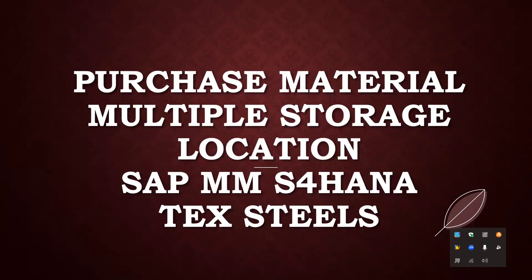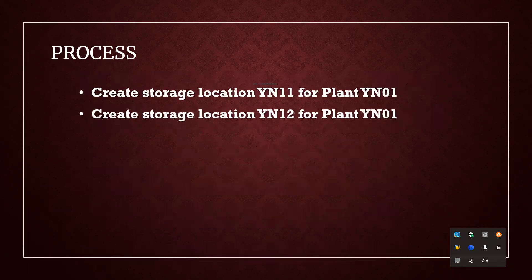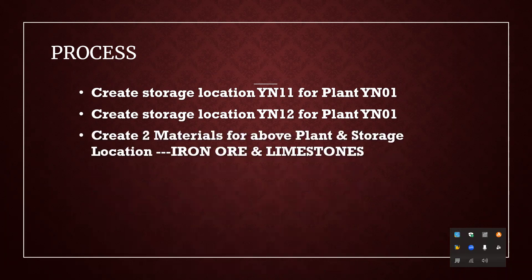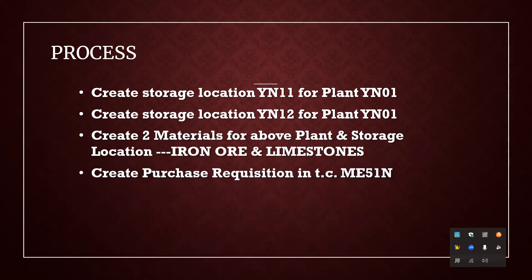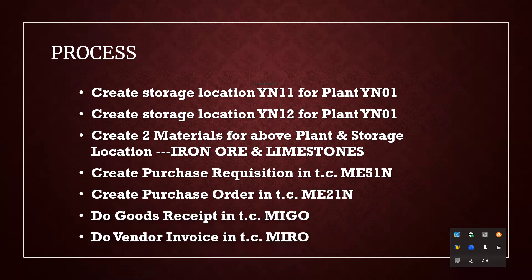Hello everybody, Swamina here. Today we are going to purchase raw material for different storage locations in SAP MM. The process will cover creating storage locations YN11 and YN12 for plant YN00, creating two raw materials (iron ore and limestone), then doing a purchase requisition in ME51N, a purchase order in ME21N, goods receipt, and invoice verification.